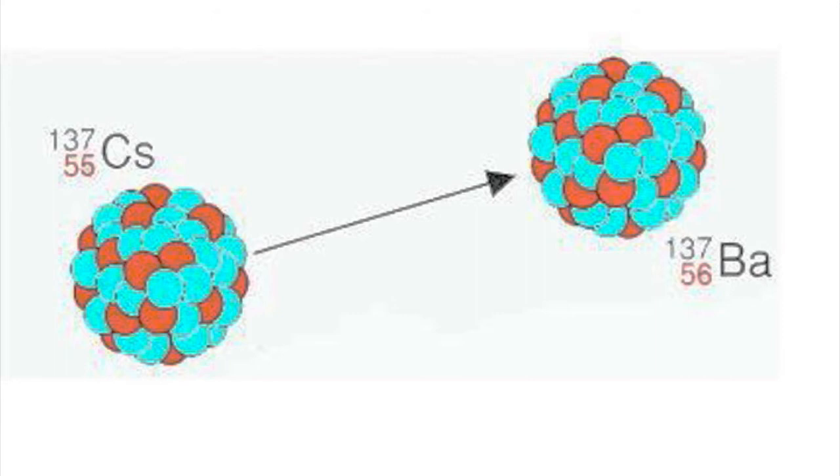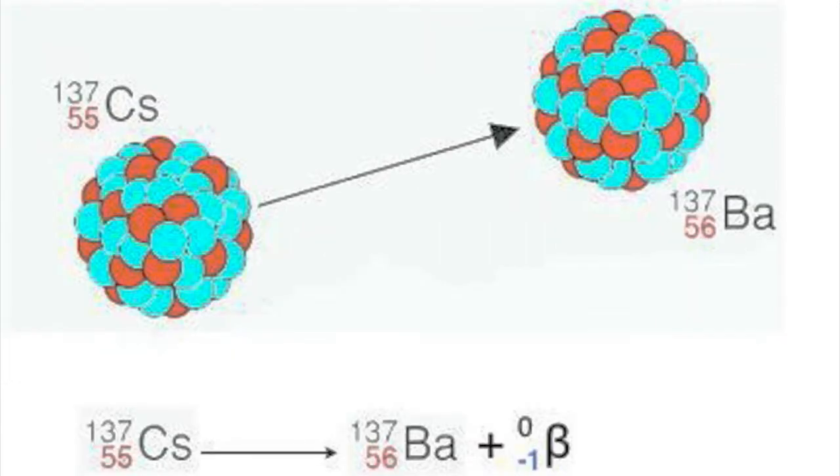Caesium-137 is radioactive and changes into barium-137 by beta emission. Note that the nucleon number on each side of the equation is the same, and the total proton number on each side of the equation is the same. In effect, a neutron is split to become a proton and an electron.